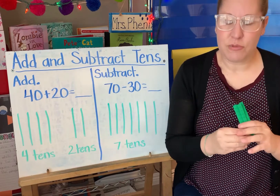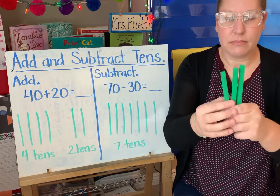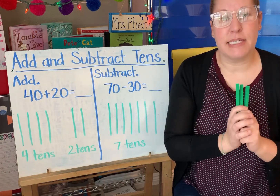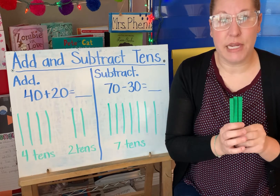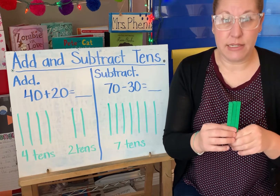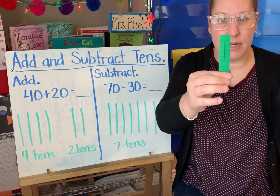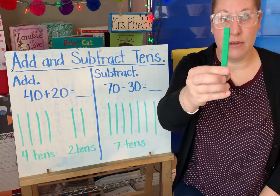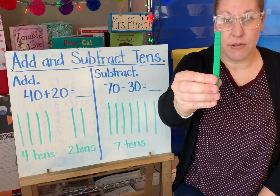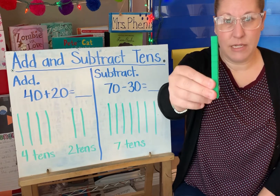Let's take a look at a subtraction example. Here are my three 10s. Let's say I want to take away 20. So I want to do 30 minus 20. I know that 20 is two 10s. So there's my 30 — take away one, two 10s. What's left? One 10. So 30 minus 20 would equal 10. One 10.